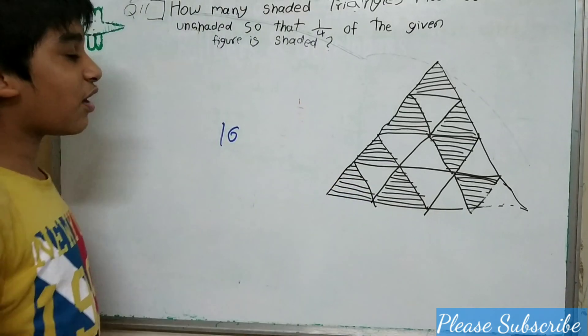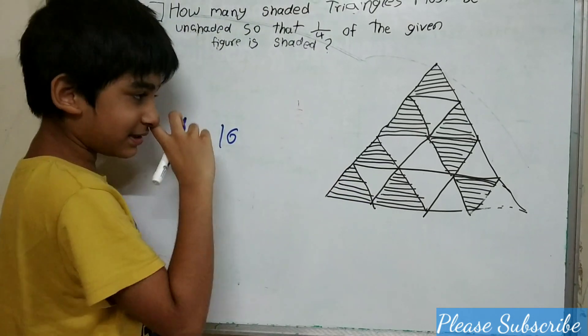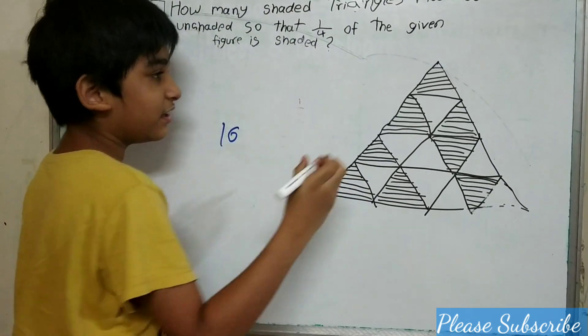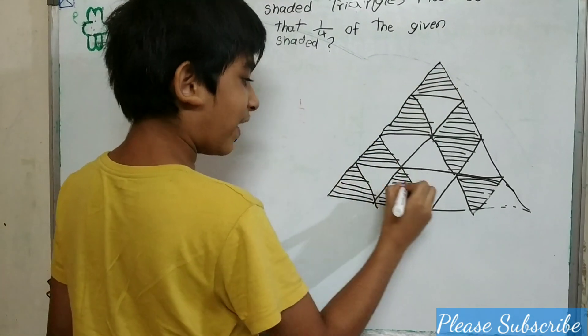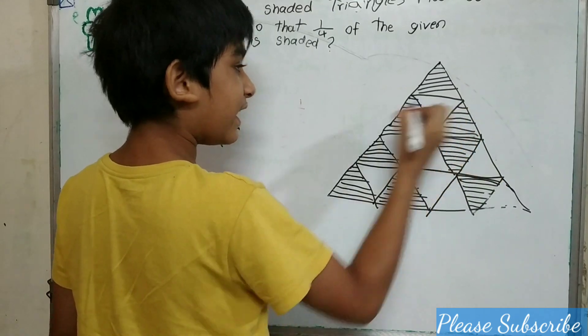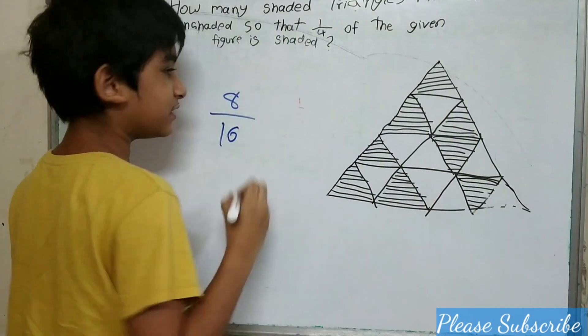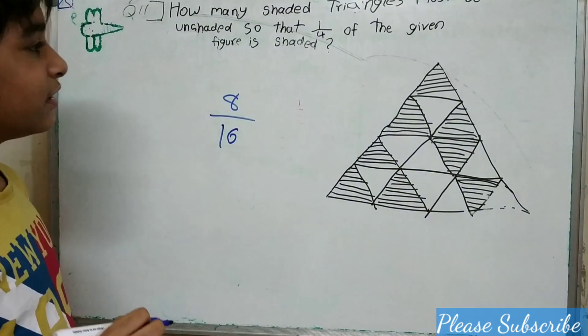Now we will find how many triangles are shaded: 1, 2, 3, 4, 5, 6, 7, 8. So 8 triangles are shaded.